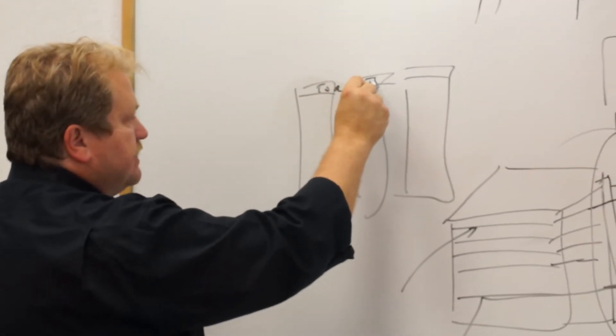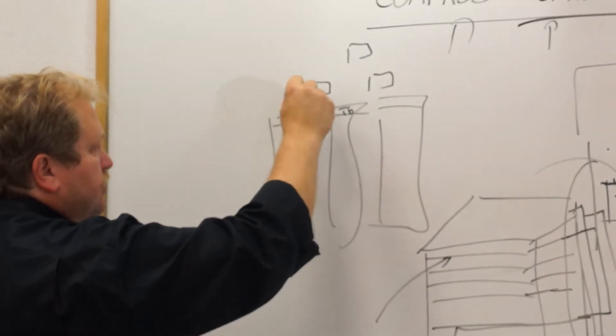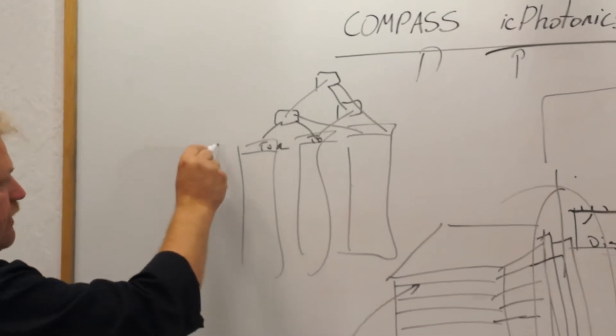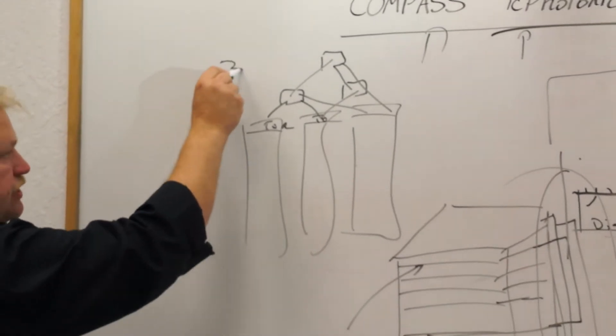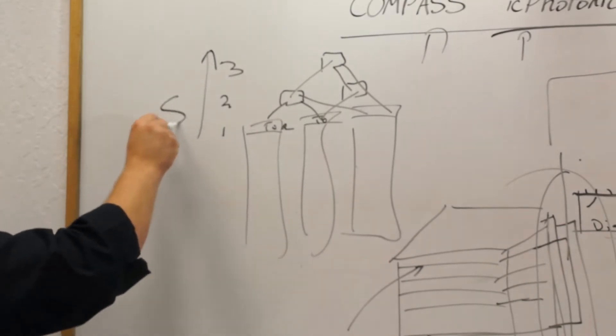But then above the TOR, you have an aggregation layer. And above that, what you do is you connect all of these systems together. And essentially, you have a one-stage, two-stage, three-stage switch that adds latency, it adds cost, it adds space.